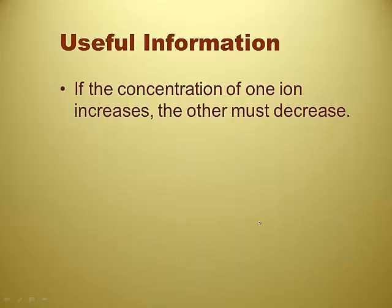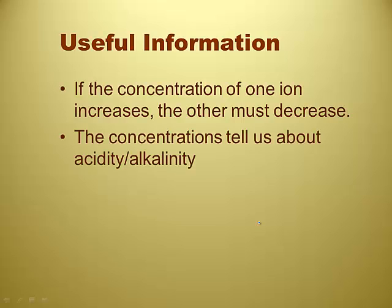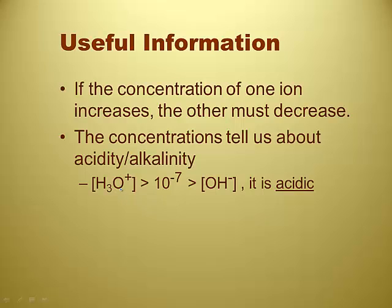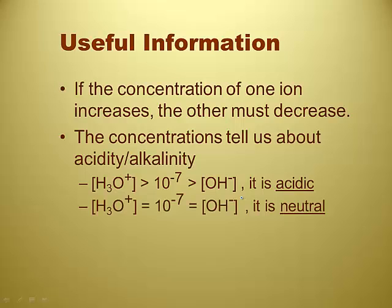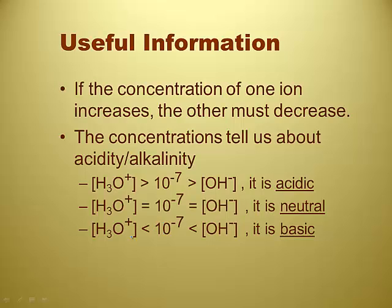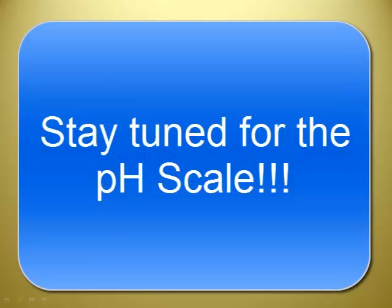These concentrations do have meaning. If the hydronium ion concentration is greater than 1 times 10 to the negative 7, there's more hydronium than hydroxide — that's acidic. If they're both equal to 1 times 10 to the negative 7, it's neutral. If your hydronium ion concentration is less than 1 times 10 to the negative 7, you're going to have a basic solution — more hydroxide than hydronium. That's kind of tough to evaluate though — there's got to be a better way.